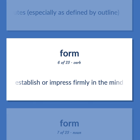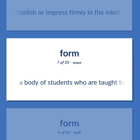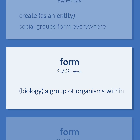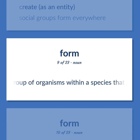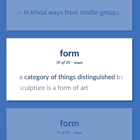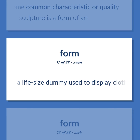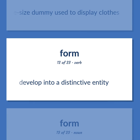Form (continued): Establish or impress firmly in the mind. A body of students who are taught together. Create as an entity. Example: Social groups form everywhere. Biology: a group of organisms within a species that differ in trivial ways from similar groups. A category of things distinguished by some common characteristic or quality. Example: Sculpture as a form of art. A life-size dummy used to display clothes. Develop into a distinctive entity.